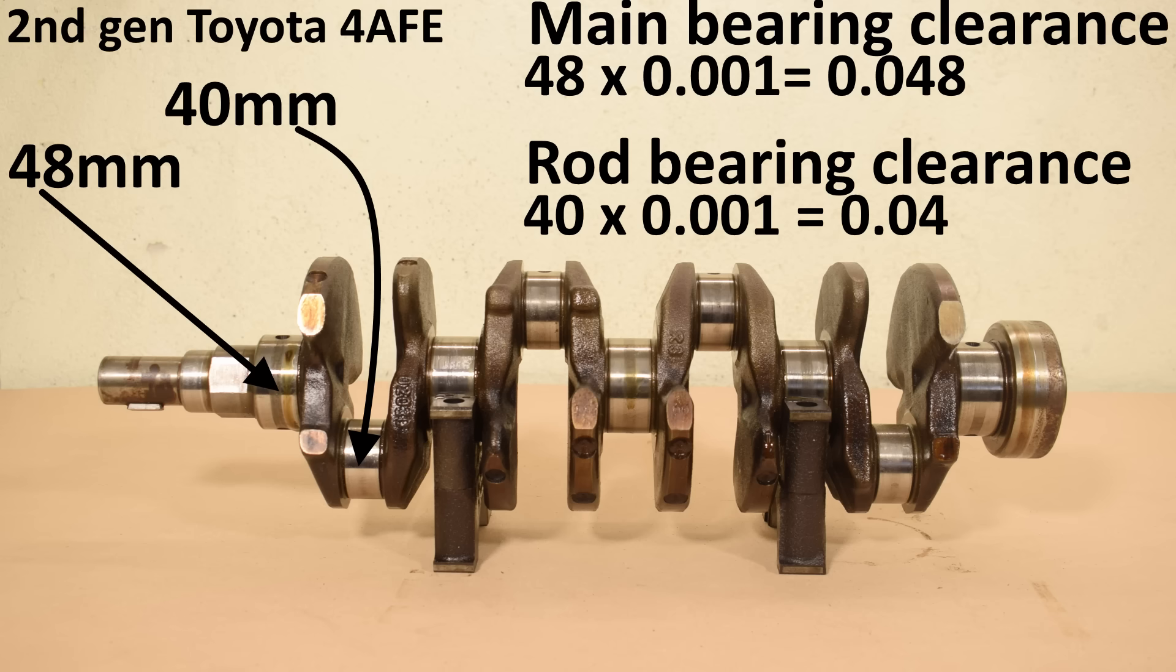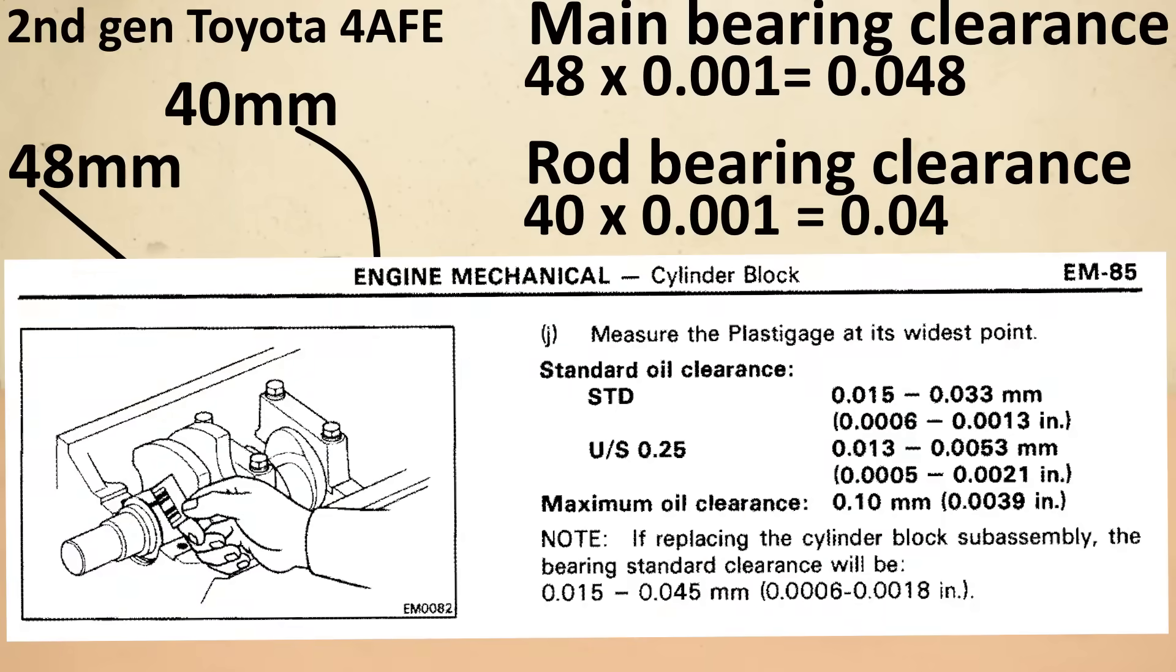So we can call this a rule of thumb bearing clearance, but if we check our factory service manual, we will see that it recommends tighter bearing clearances than this. This isn't a very modern engine, but you will see that many modern engines do run tighter stock clearances than what our rule of thumb would recommend. There's a whole science behind tight versus loose clearances, and we will cover that in a future video.